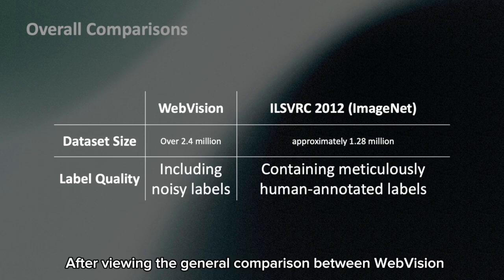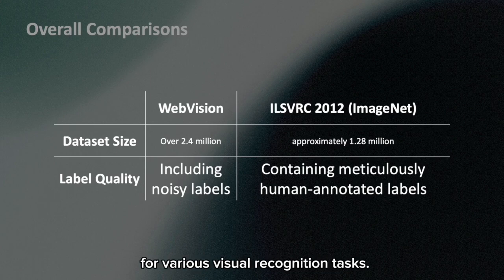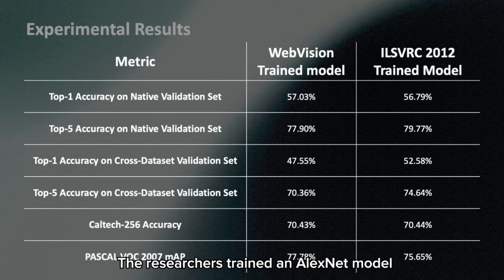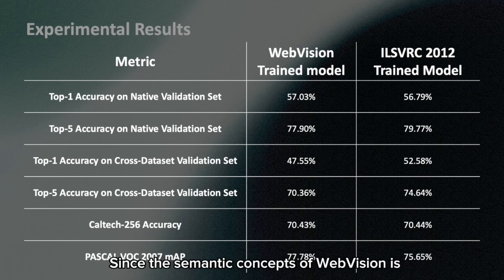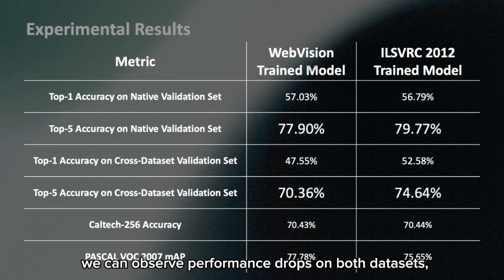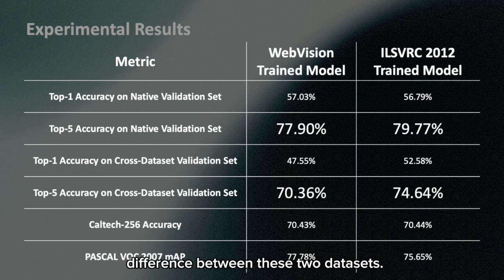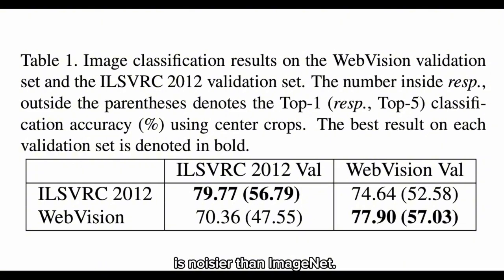After viewing the general comparison between WebVision and ImageNet, the researchers delved into practical applications using the WebVision database to explore its effectiveness for various visual recognition tasks, comparing its performance against ImageNet. They trained an AlexNet model and verified performance on the validation sets of both datasets. To make direct and clear comparisons, let's have a look at this table. Since the semantic concepts of WebVision are the same as those in ImageNet, the researchers conducted cross-dataset testing. Both top-1 and top-5 accuracy show performance drops on both datasets, indicating a domain difference. The performance drop for WebVision is larger than that of ImageNet, which can be explained by the fact that WebVision is noisier.